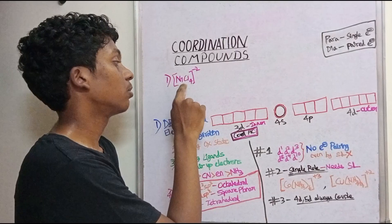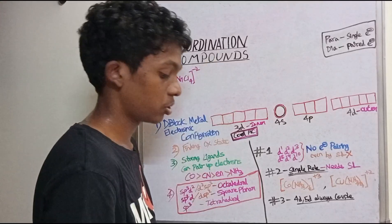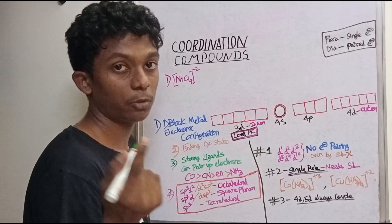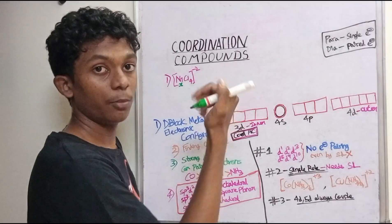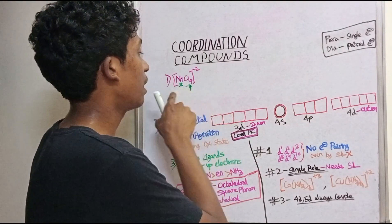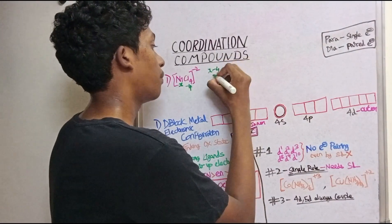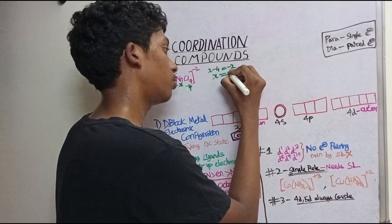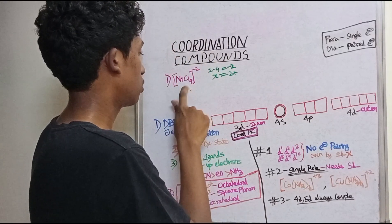Here is the first example: Nickel with Chlorine 4, in square brackets with minus 2 charge — [NiCl4]²⁻. First, find the oxidation state of the central metal Nickel. Cl has a charge of -1 each, so 4 Cl gives -4. Therefore x + (-4) = -2, so x = +2. Nickel is in the +2 oxidation state.